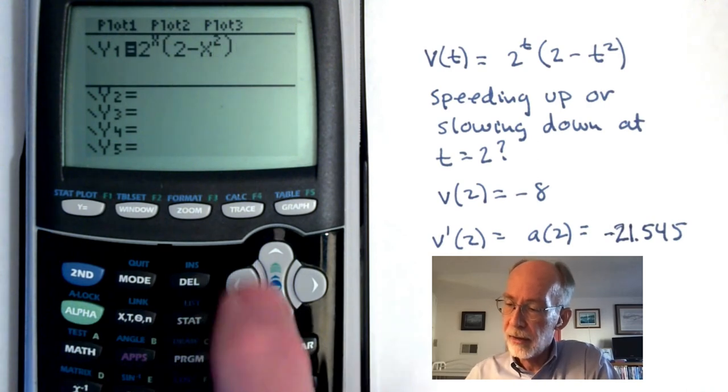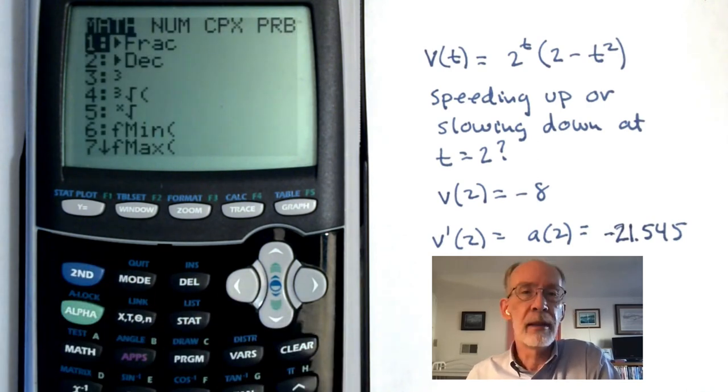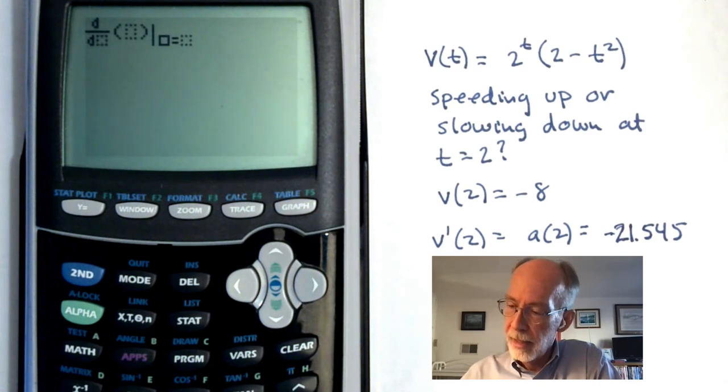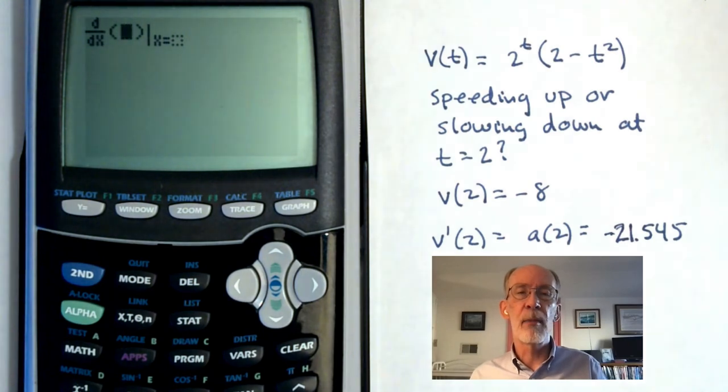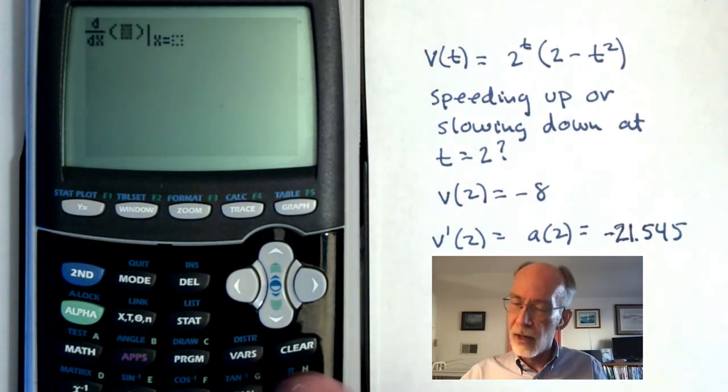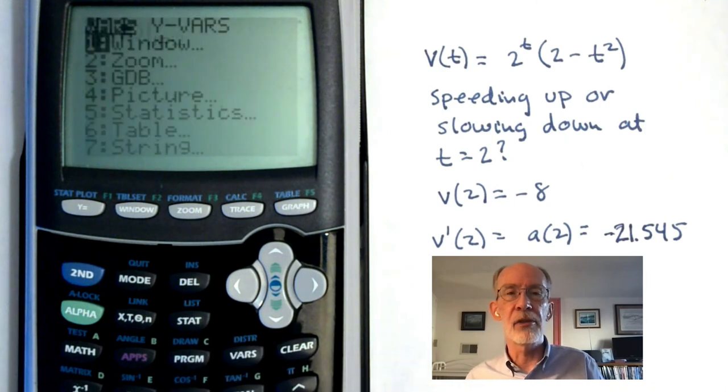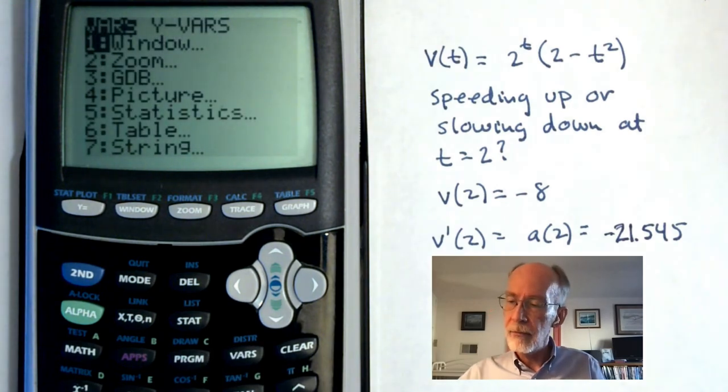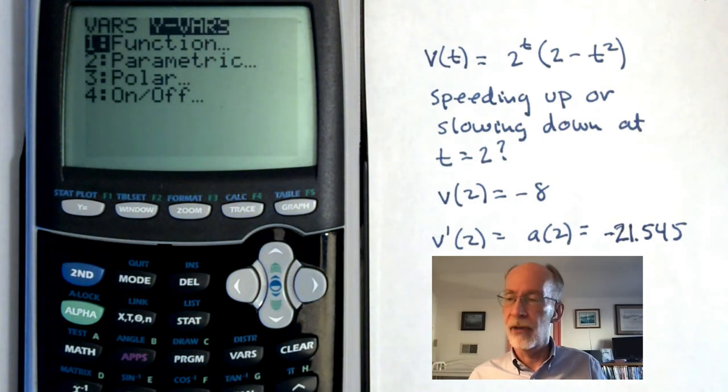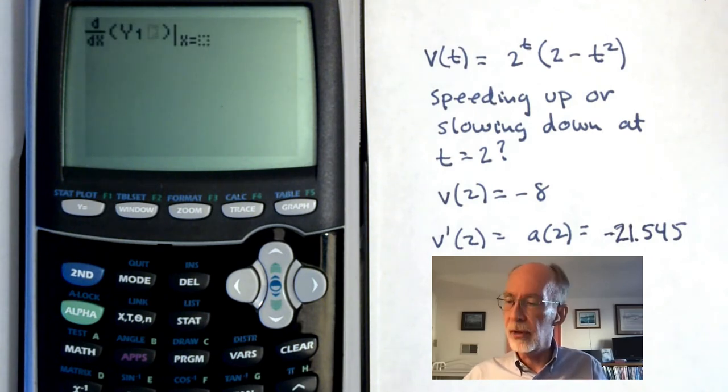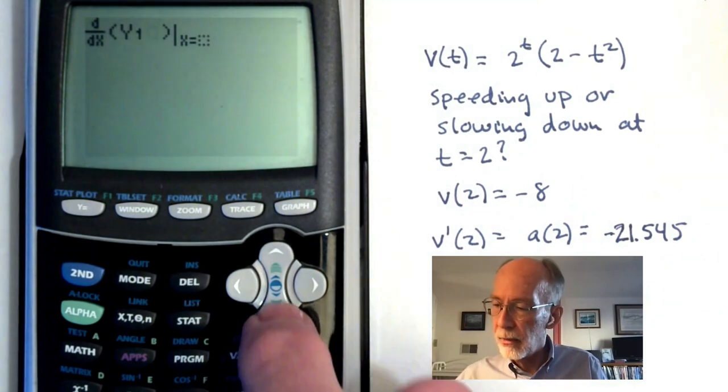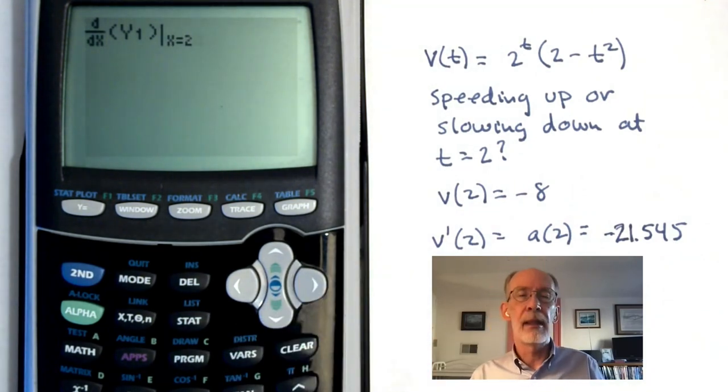Then I can quit out of here and I can go back and use the n-deriv command. And it's still the derivative with respect to x. But now I can just pull the y1 from the menu. And the way I do that is I hit vars over here to the left of clear, short for variables. This is a y. So we'll hit yvars. It's a function. We'll hit function. And we can then arrow around this menu and just pluck these out and paste them back into whatever commands we're using. And then we will enter the 2. And there it is.